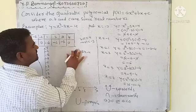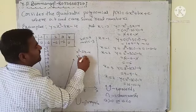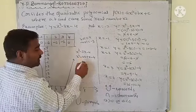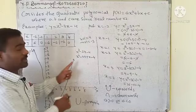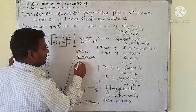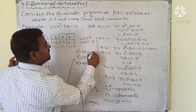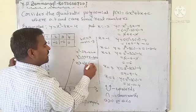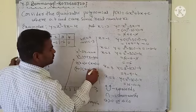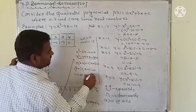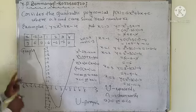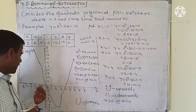To find the roots, factorize: x² - 3x - 4 = x² - 4x + x - 4 = x(x - 4) + 1(x - 4) = (x + 1)(x - 4). Setting each factor to zero: x + 1 = 0 gives x = -1, and x - 4 = 0 gives x = 4. Hence the roots are x = -1 and x = 4, which are where the parabola intersects the x-axis.